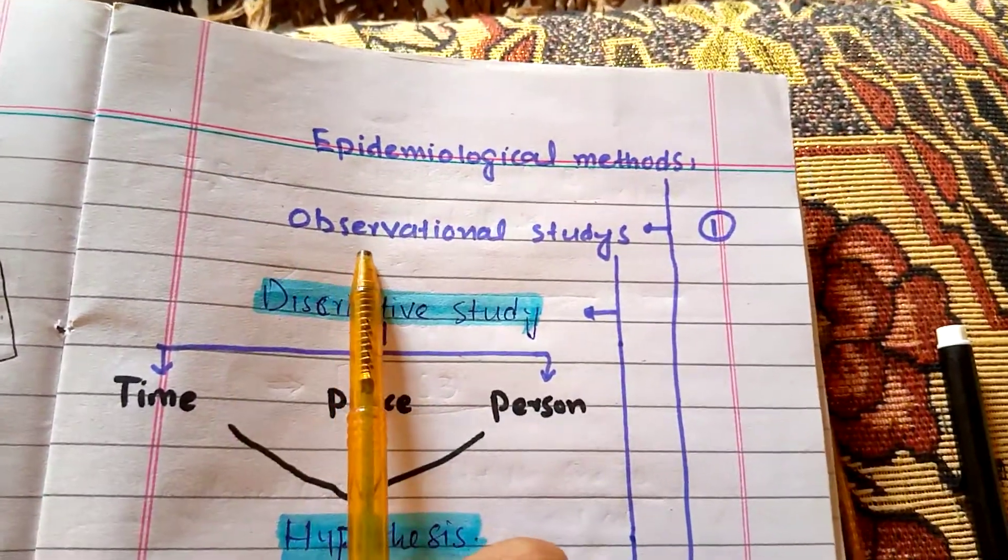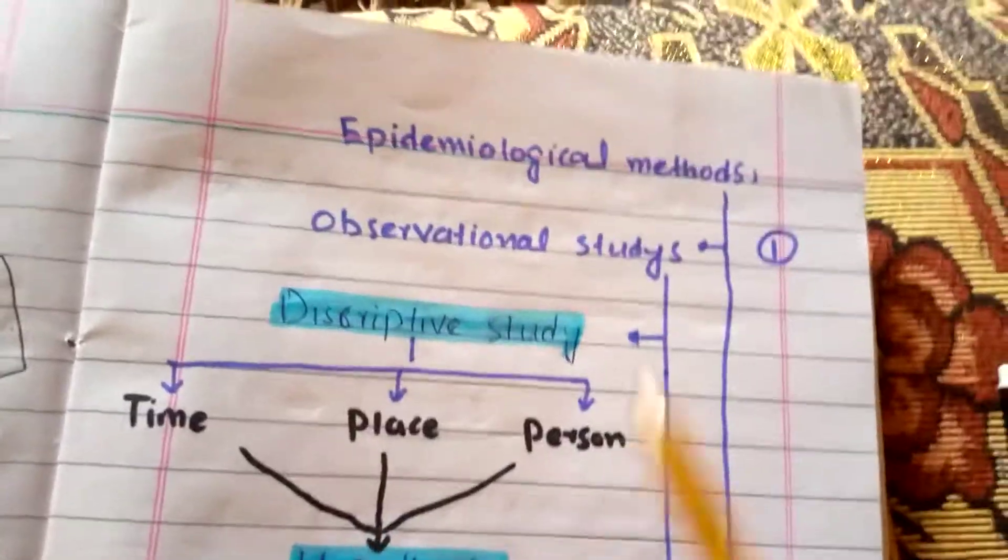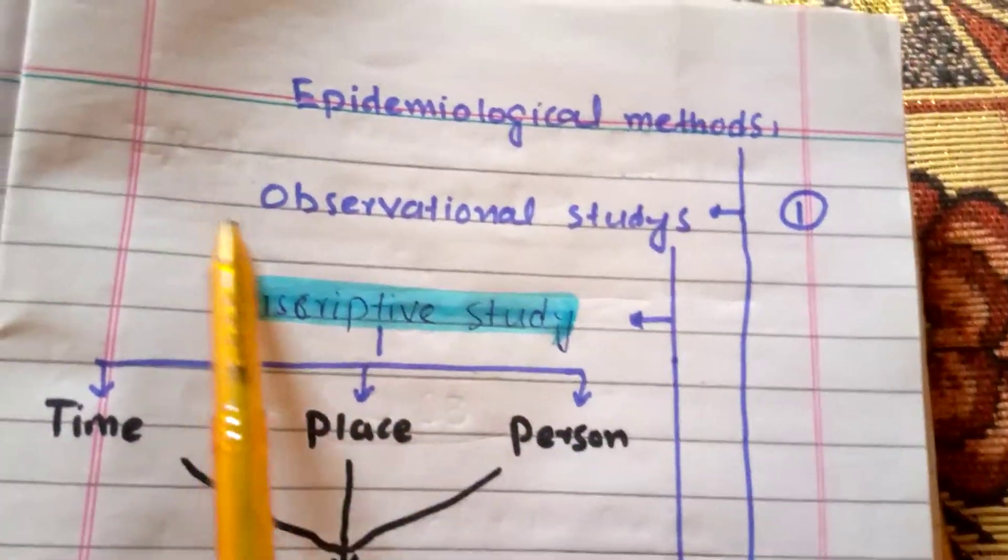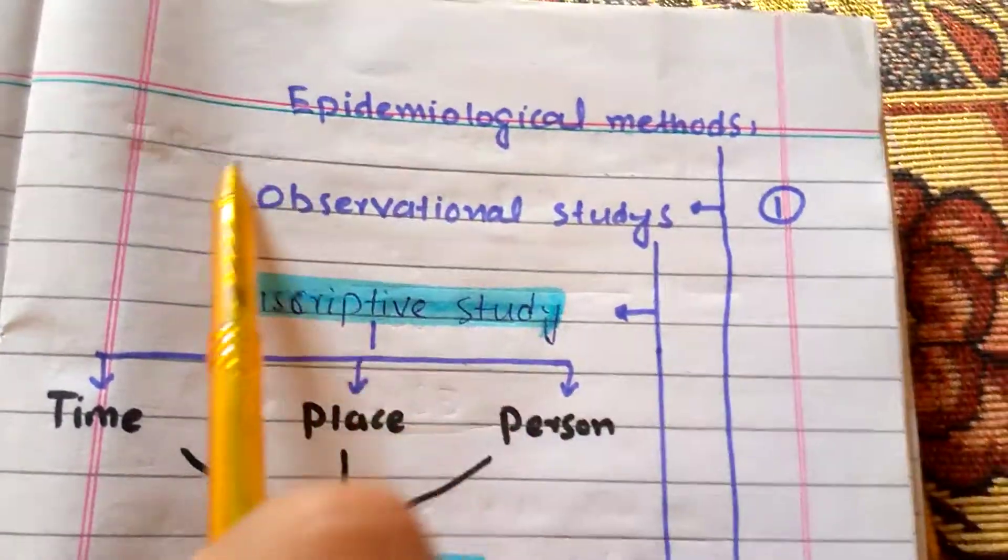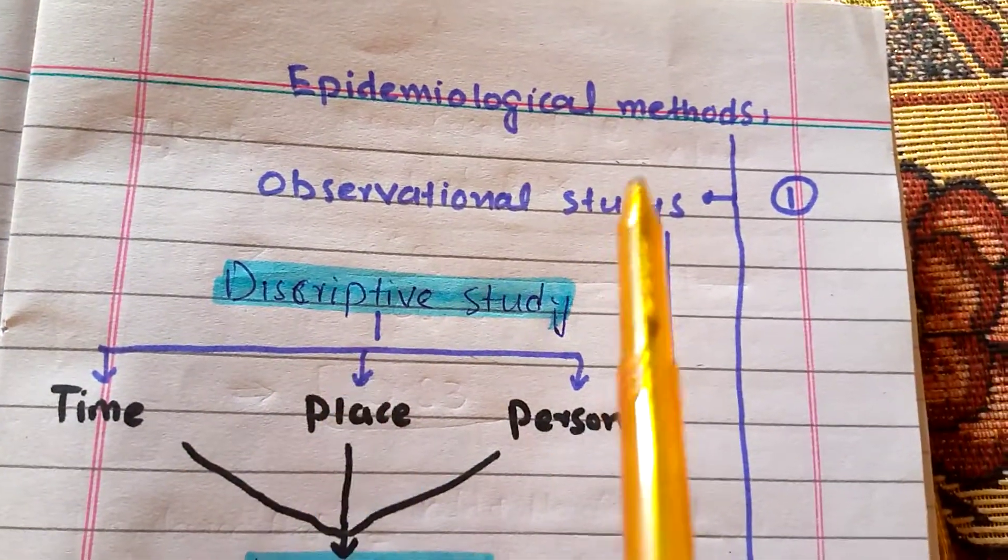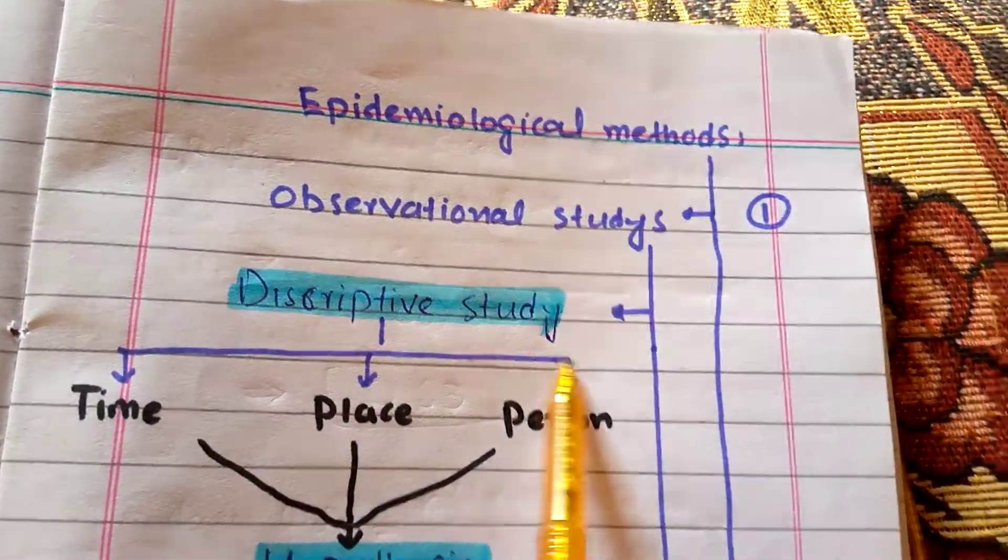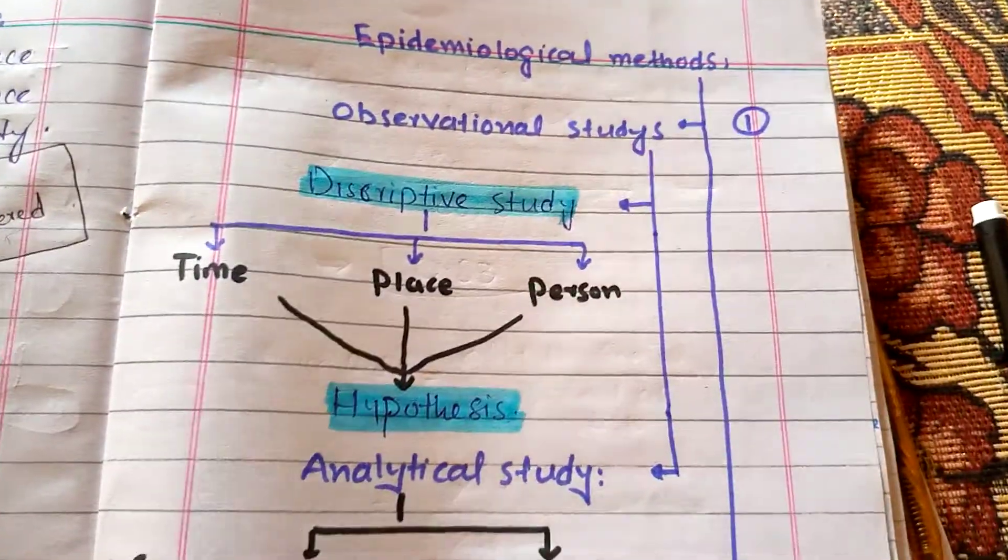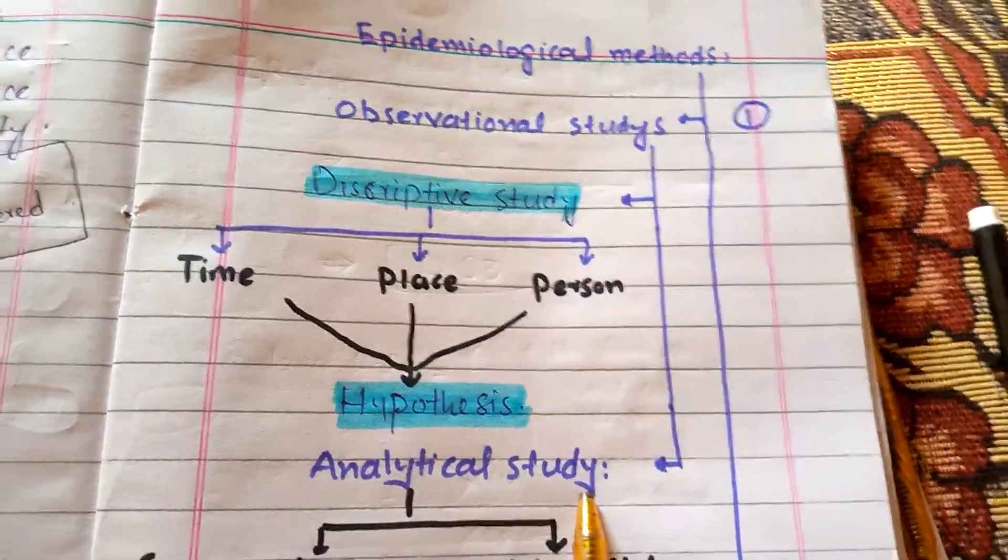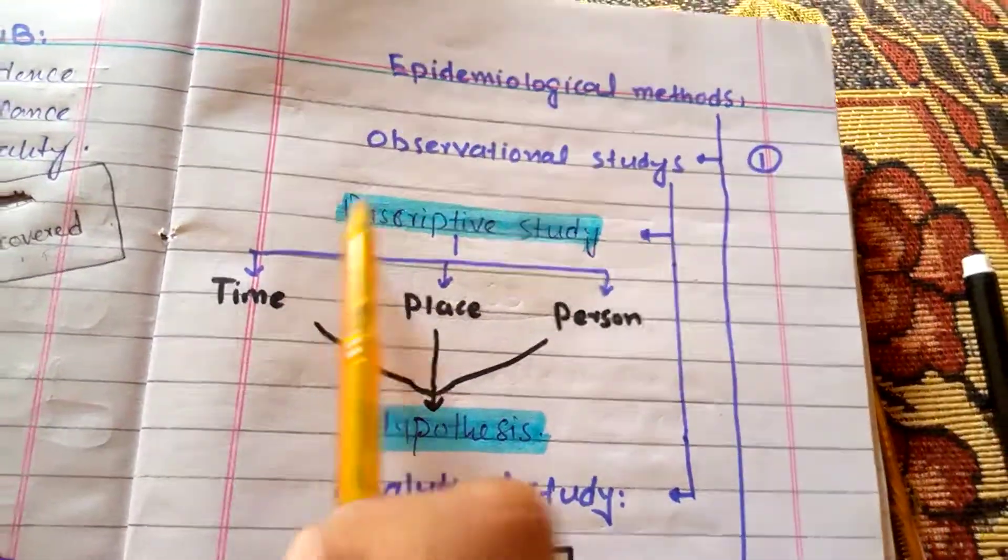The first one is observational studies and the second one is experimental study. Observational study is a study in which nature takes part, and this study is divided into two: descriptive study and analytical study.